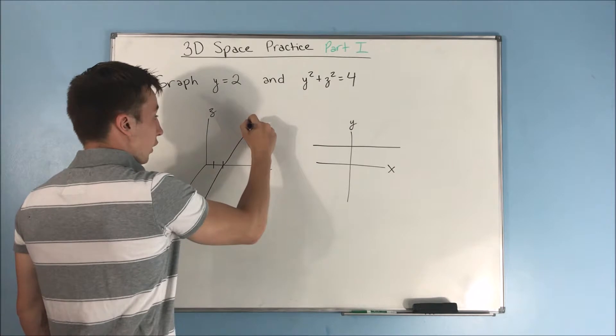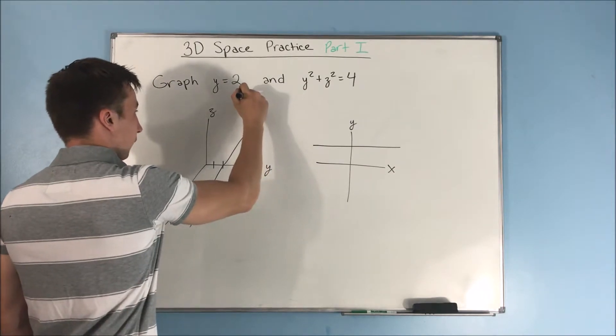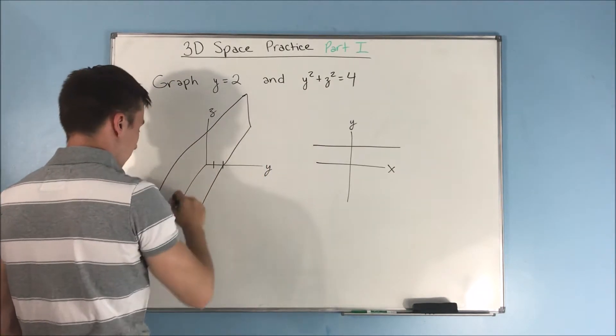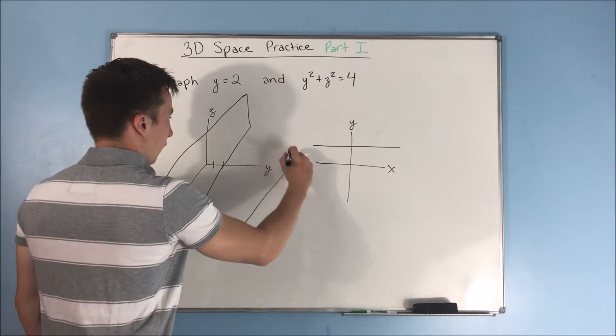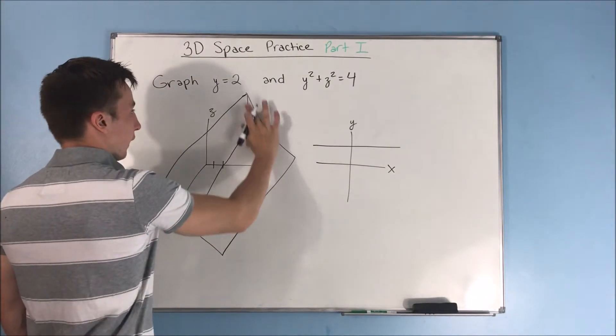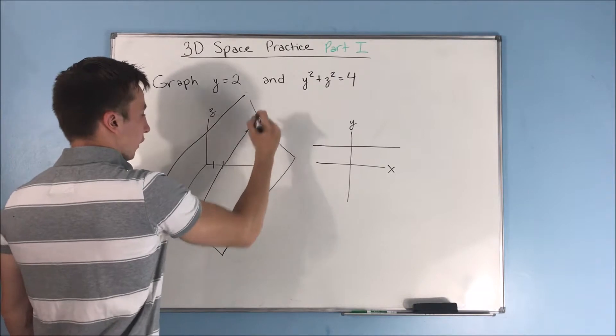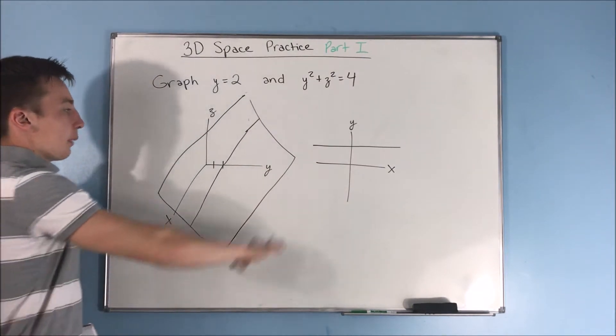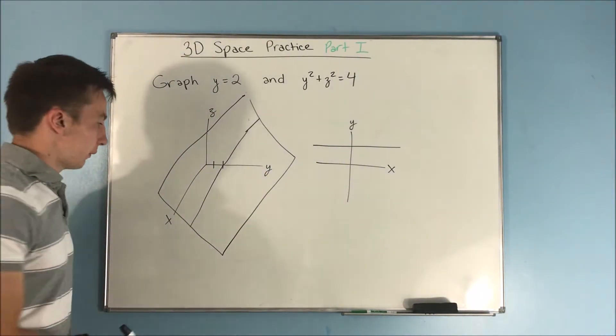And that makes sense because in two dimensions, let's draw a two dimensional graph over here of y equals 2. This is your x. This is your y. Y equals 2 is just this line right here. It can be any x at all. So now you get this plane. This plane y equals 2. You can kind of picture that plane y equals 2.